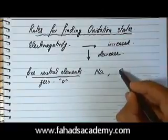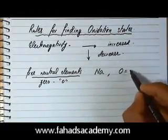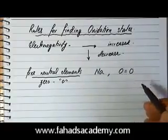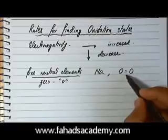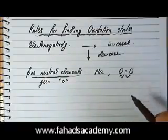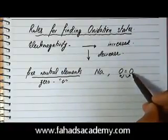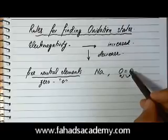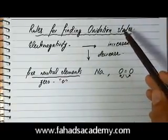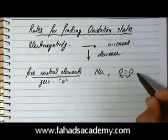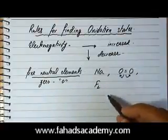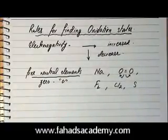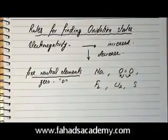Similarly, if you have oxygen — oxygen always exists as an oxygen molecule with a double bond between two oxygen atoms. Both oxygen atoms are equally electronegative, so they have an equal tendency to gain electrons. Since both exert exactly the same force, the electrons in the double bond do not shift toward either atom, so both oxygen atoms have an oxidation state of zero. Other free elements — fluorine, chlorine, sulfur — all have an oxidation state of zero. Any free element in its standard state has an oxidation state of zero.